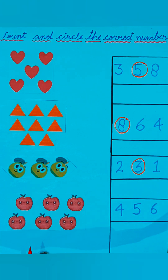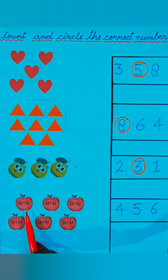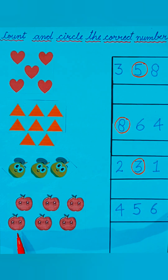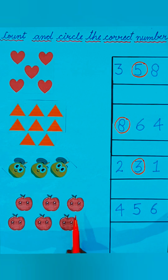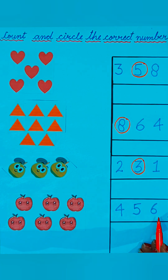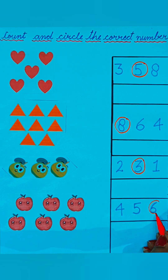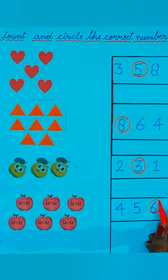Now see the apple. Let's count: one, two, three, four, five, six — six apples are given in the picture. Now see the numbers: four, five, six. Which is the correct one? Six is the correct number, so we will circle on number six because six apples are given.